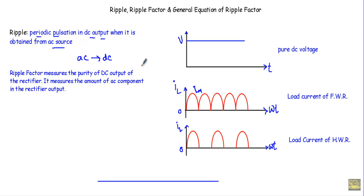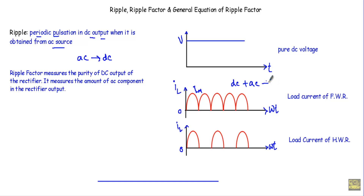If we get a pure DC voltage it will maintain a constant voltage difference across two terminals. Therefore with respect to time we will get a straight line, and since the value of DC voltage is constant, this straight line will be parallel to the time axis. Now look at the output of the rectifier — this is the output or load current of the full wave rectifier circuit, and this is the output or load current of the half wave rectifier circuit. The output of a half wave and full wave rectifier circuit contains both DC component and AC component — that's why this is known as pulsating DC quantity.